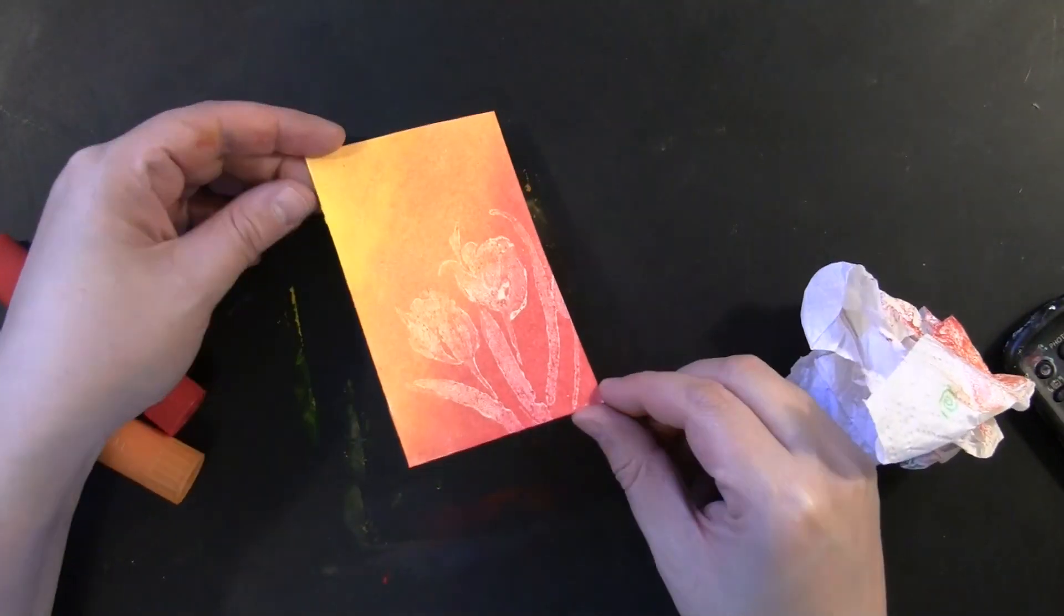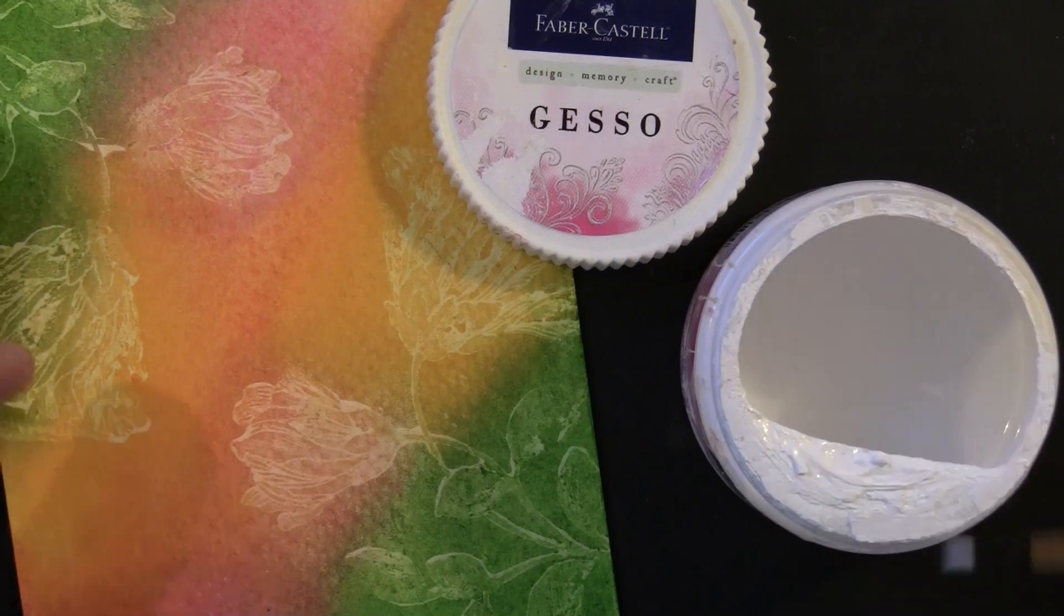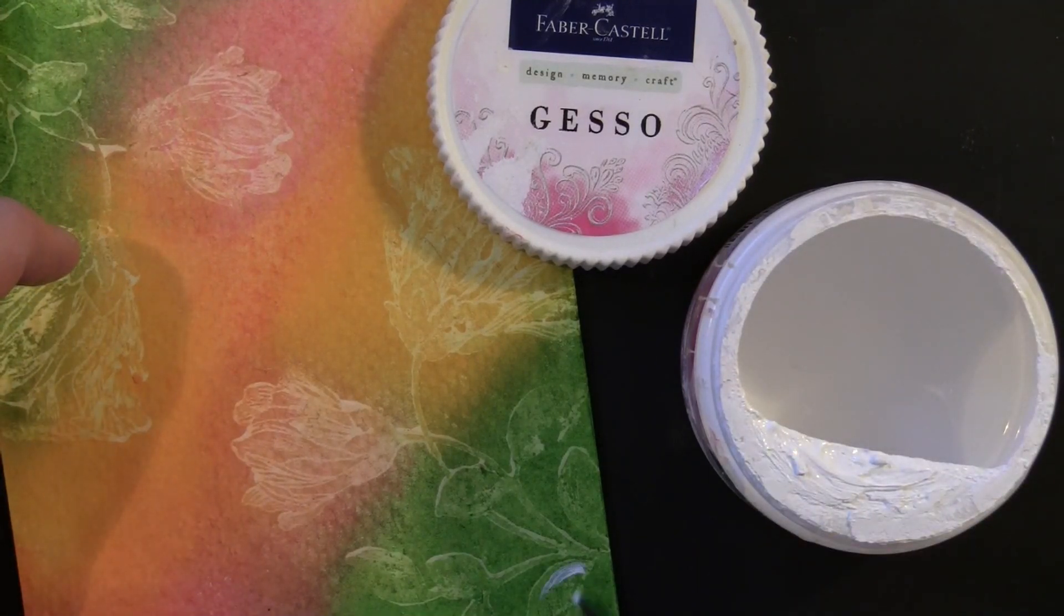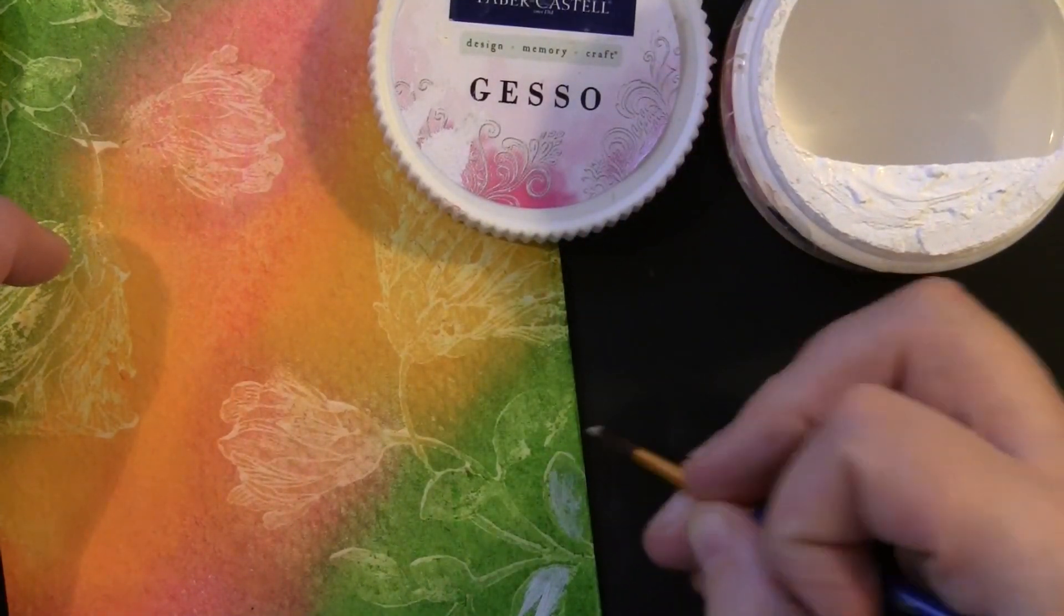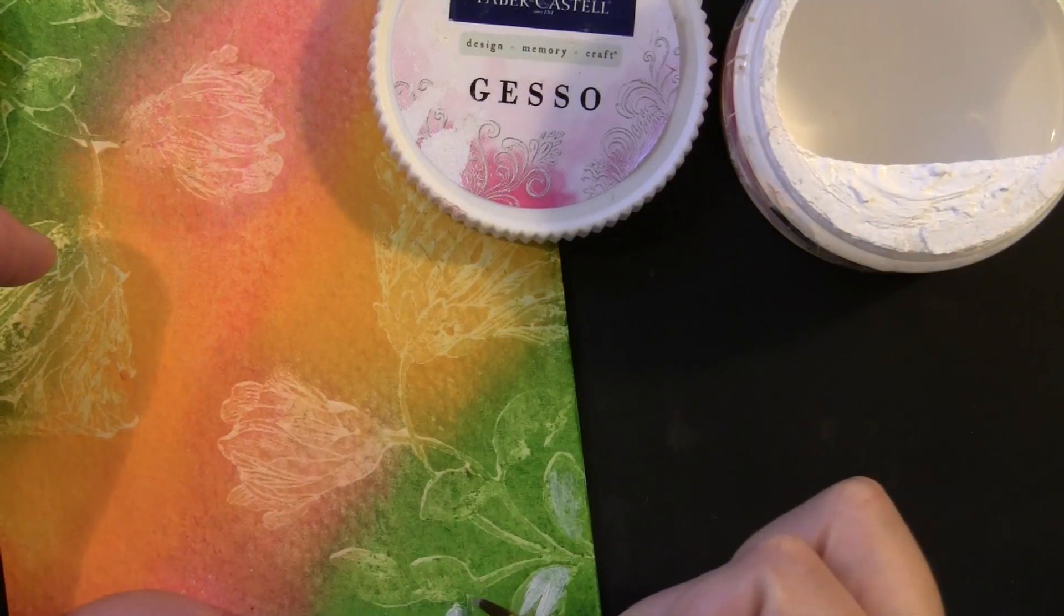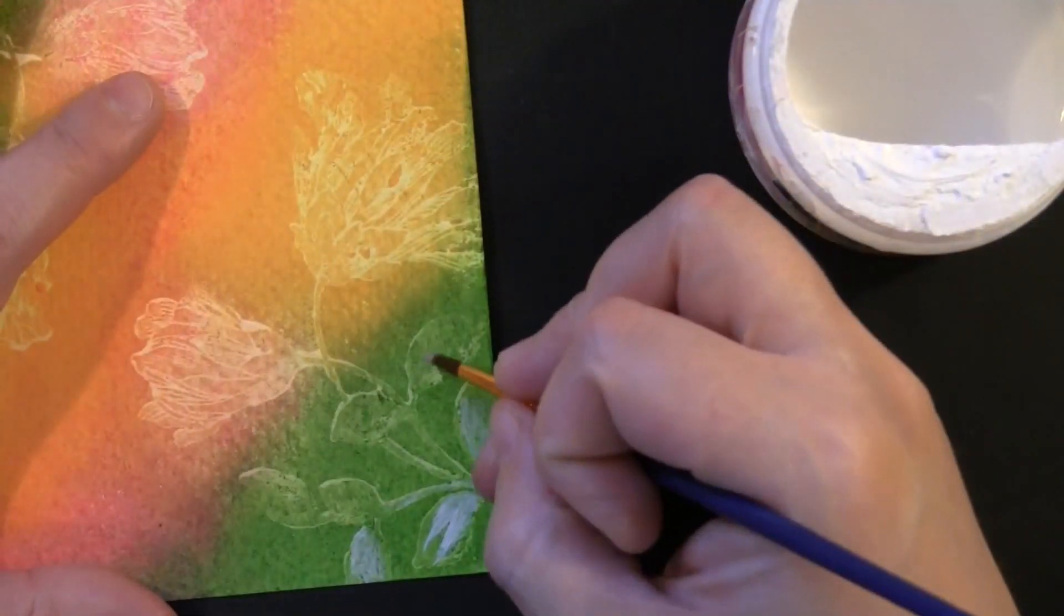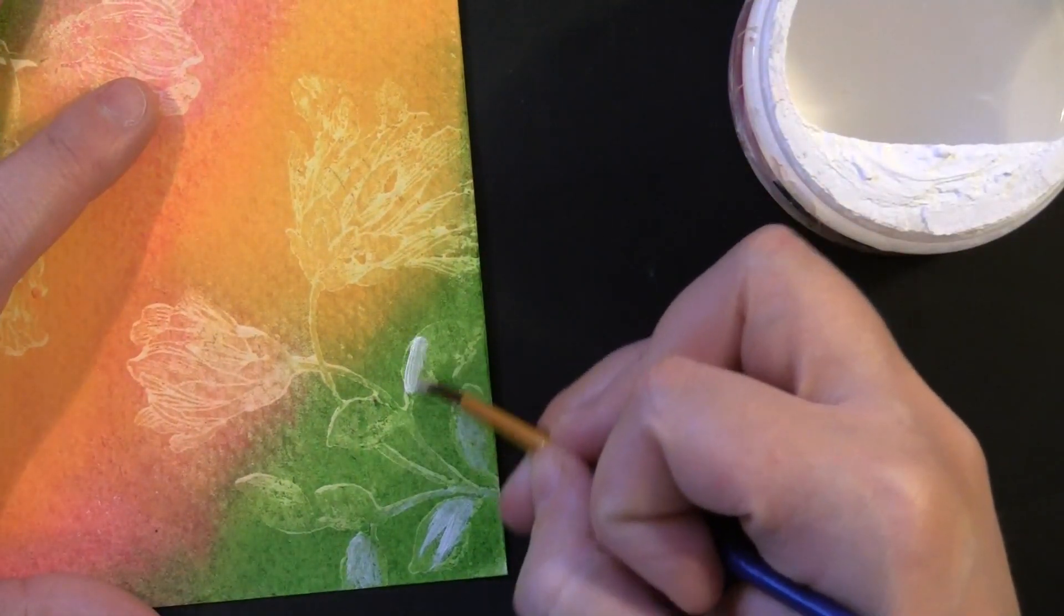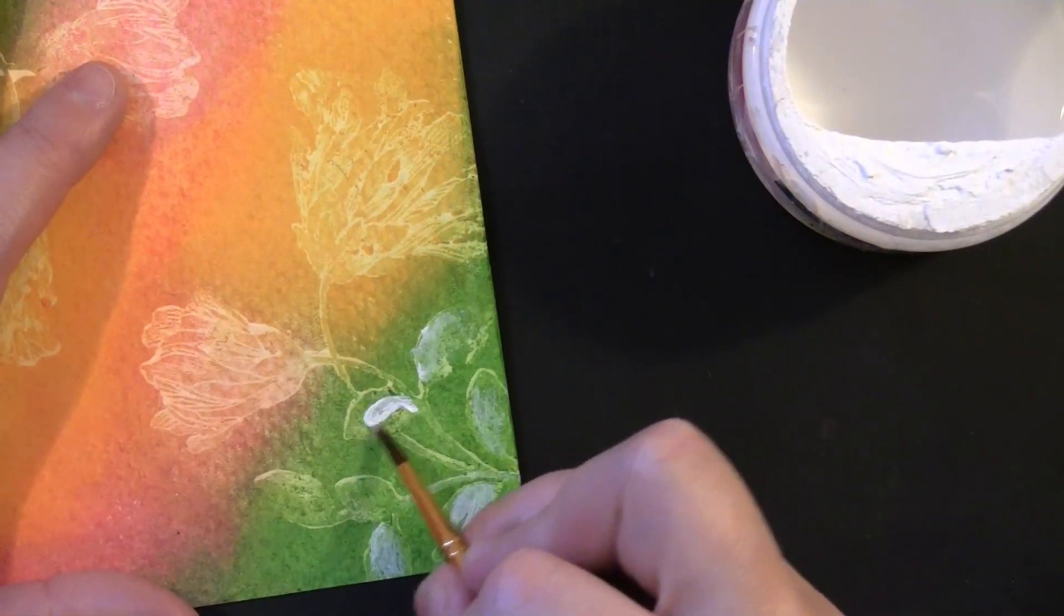Now if you want to have your ghost stamping show up just a little bit more, and this is totally an optional step, I just wanted it to pop a little bit more. I'm using a very small dry brush and using a little bit of gesso to paint over that image. I'm not painting it in completely solid. You can really see the brush strokes when I apply the paint. But once that dries, that combined with the gel medium and the gelatos, it just really makes that ghost stamping pop a little bit more.